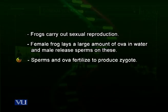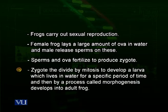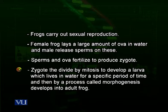Fertilization takes place in water and sperm and ova join together to form a zygote. The zygote has a 2N number of chromosomes because sperm and ovum each contribute N chromosomes. The zygote then divides by mitosis into a stage called larva. Larva is an actively feeding stage.